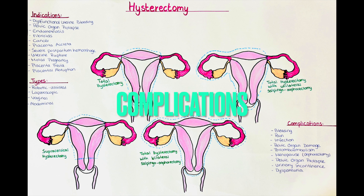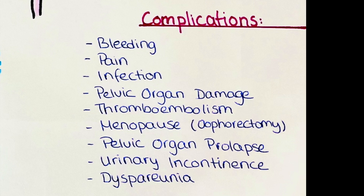What are complications of a hysterectomy? Bleeding is the most common complication; it can occur during or after surgery and can be mild or severe. Pain is a normal side effect but can be severe in some cases. Infection is another common complication that can occur at the incision site or in other organs in the pelvis. Damage to other organs may occur during surgery, such as the bladder, ureters, or intestines. Thromboembolic events can also occur, where blood clots form most typically in the legs as deep vein thrombosis that can lead to pulmonary embolism.